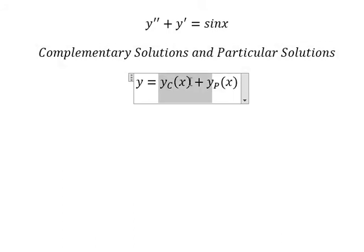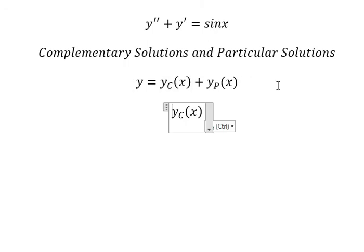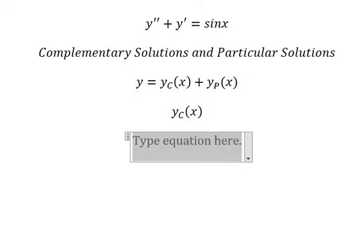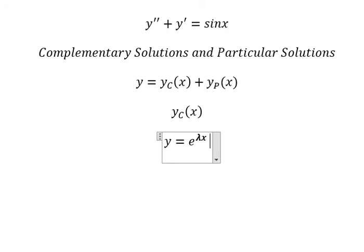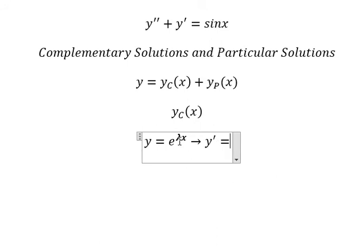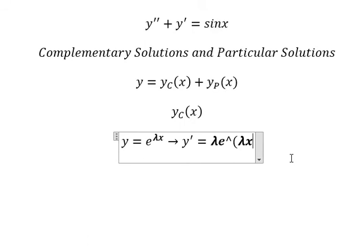For the complementary solution, we assume y equals e to the power of lambda x. The first derivative gives lambda e to the power of lambda x, and then we take the second derivative.